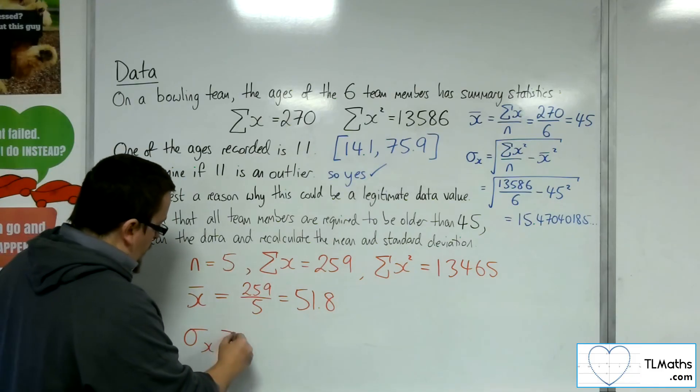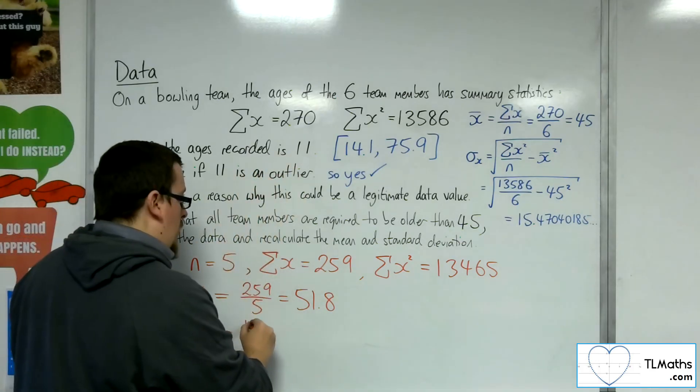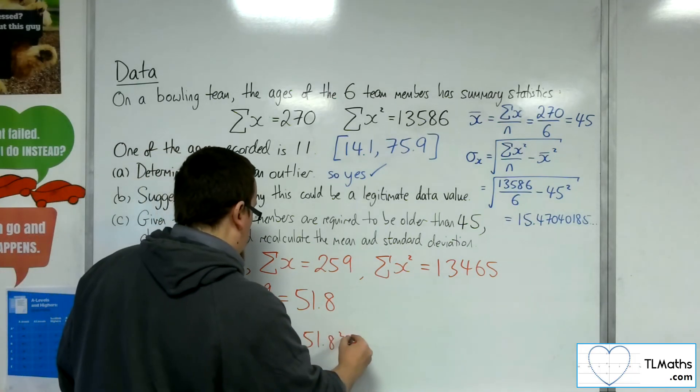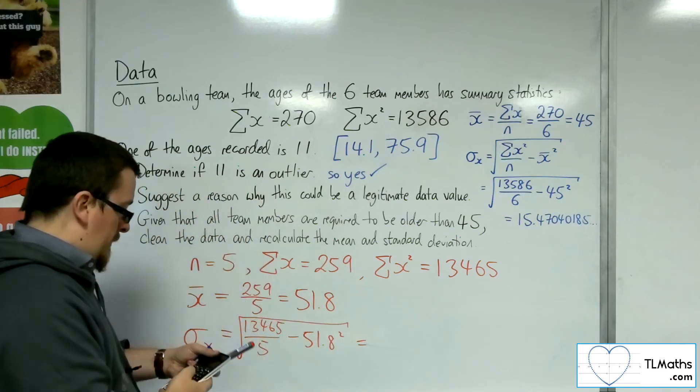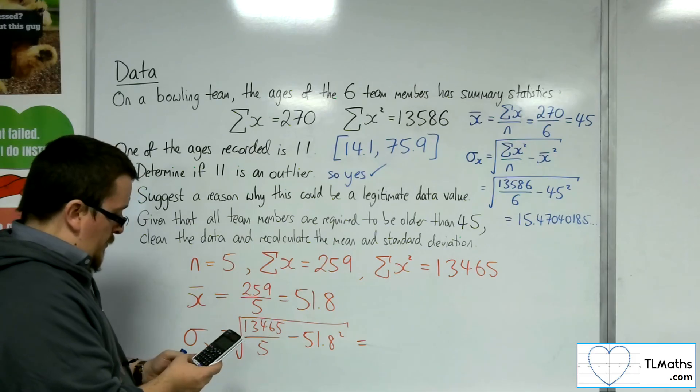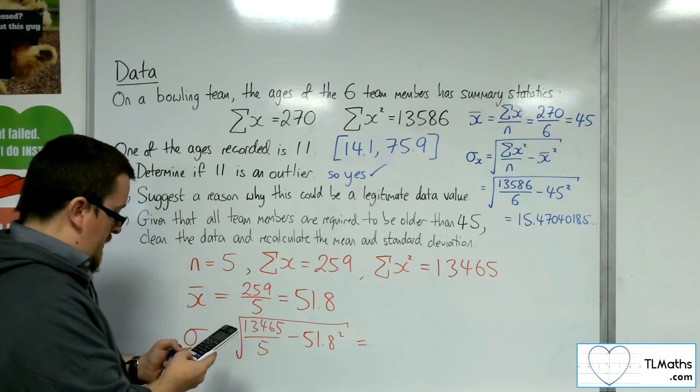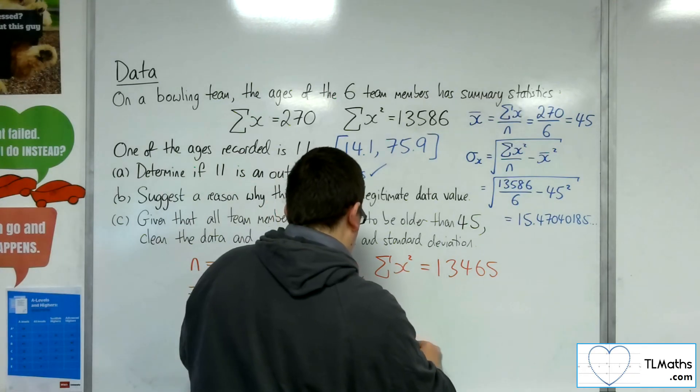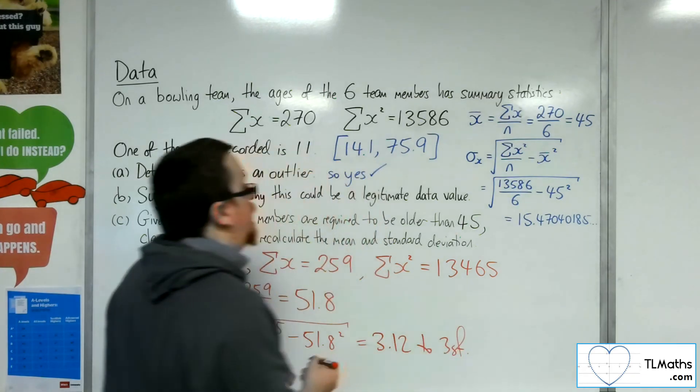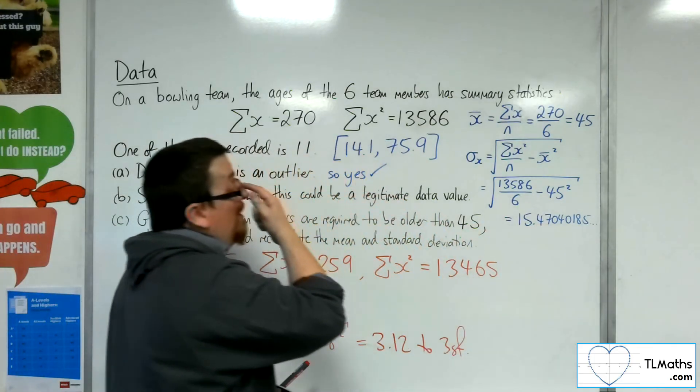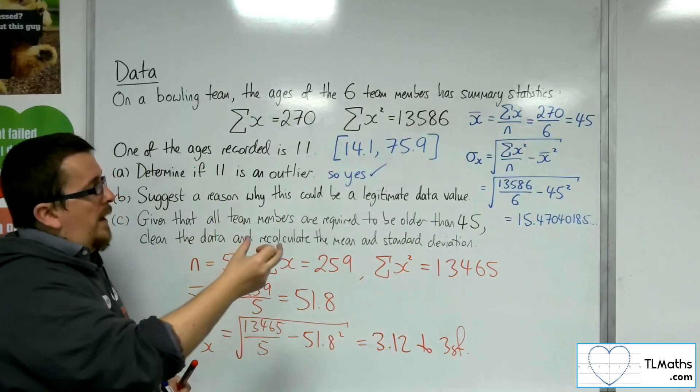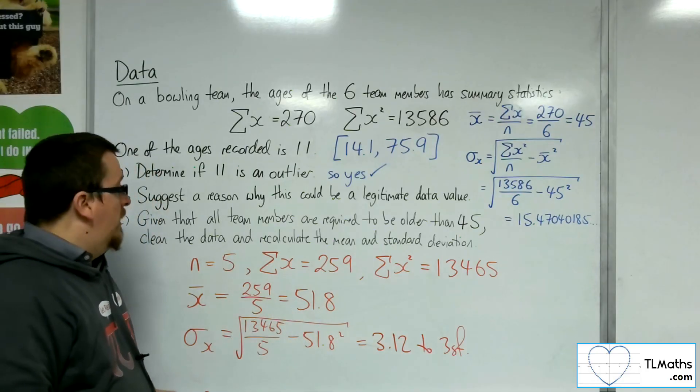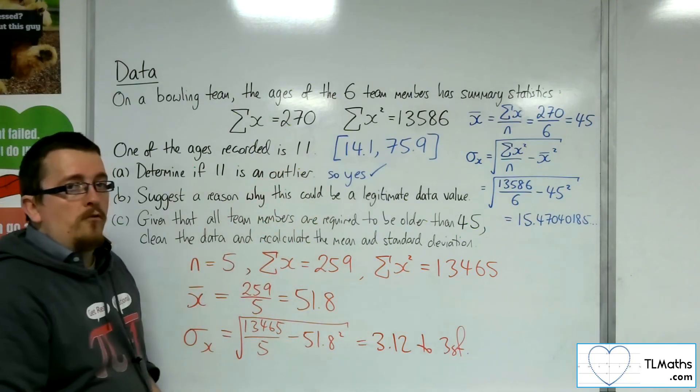And the standard deviation is equal to the sum of x squared. So 13,465 divided by n, which is now 5, take away the mean squared, square rooted. So 13,465 divided by 5, take away 51.8 squared, square rooted. And that gets me 3.12 to three sig fig. Much less than we had before because the majority of the data clearly was around the 51.8 data value. It's close to it, a 3.12 average away from it. And that 11 was way away from the rest of the data, as identified as it being an outlier.